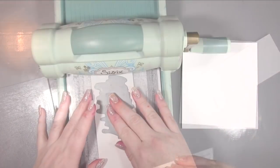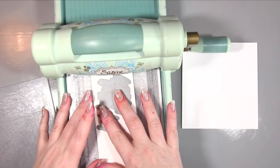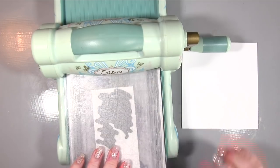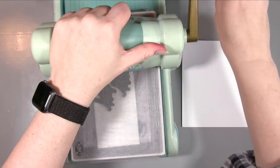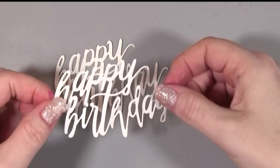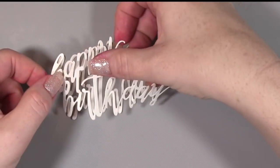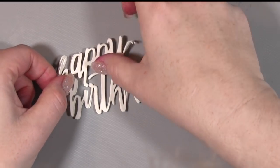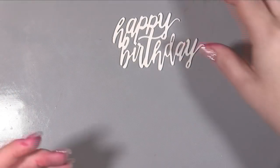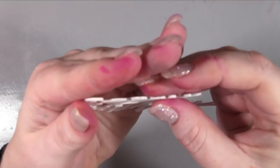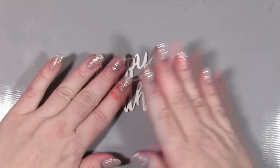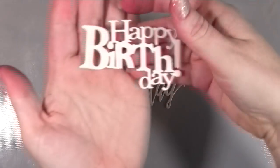Now I wanted to create some sentiments to go over the backgrounds. I thought it would be fun to do some die cuts, so I used this Altenew happy birthday die. I cut it three times and then using some spray adhesive I stuck those three together to create more of an almost like a chipboard effect sentiment.